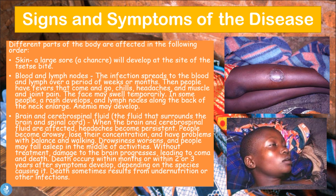Let's now talk about the signs and symptoms of African trypanosomiasis. Different parts of the body are affected in a specific order. First, the skin: a large sore called a chancre will develop at the site of the tsetse fly bite. This is what a chancre looks like in a patient infected with the T. brucei parasite.